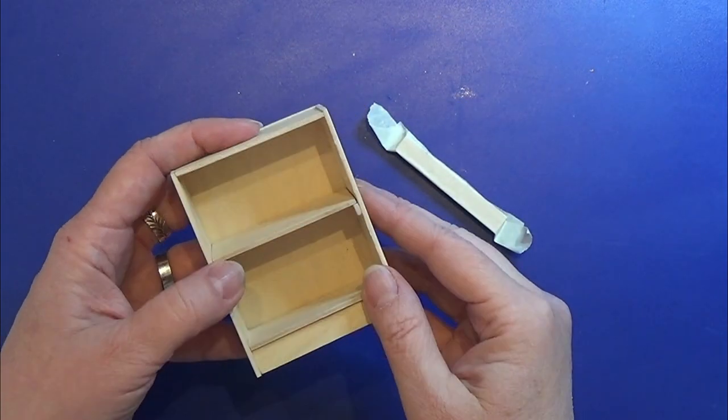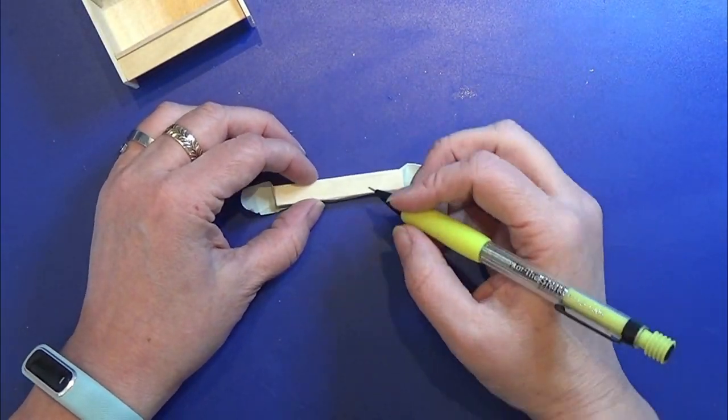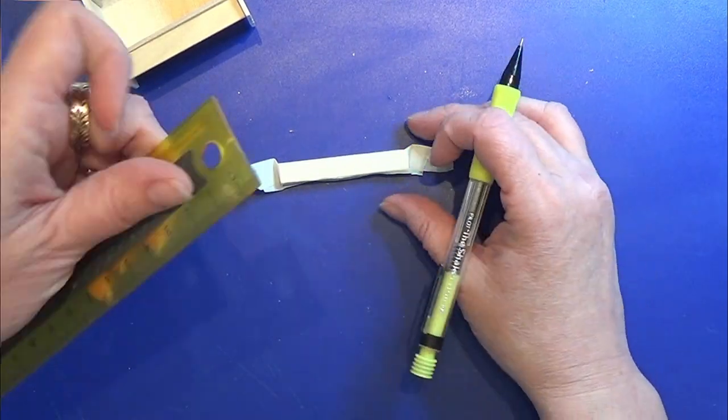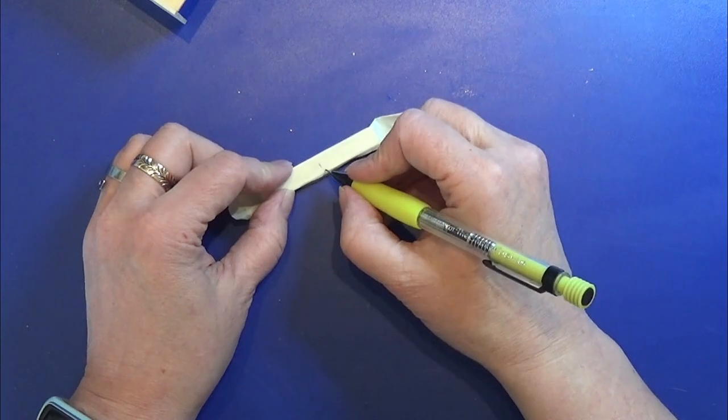I glued in the shelf and now we are going to the decorative molding. I connected all three pieces together with a piece of masking tape and I'm actually drawing my design on this masking tape.